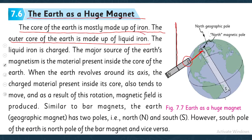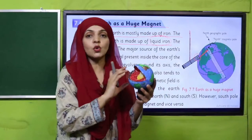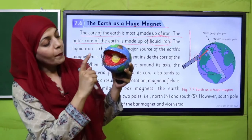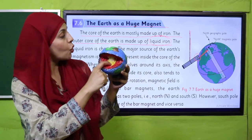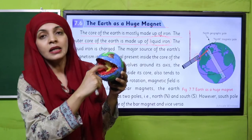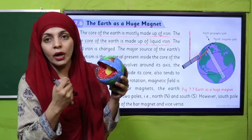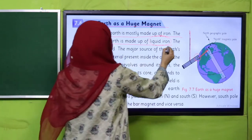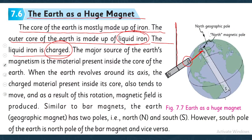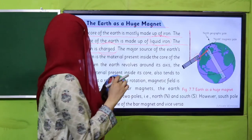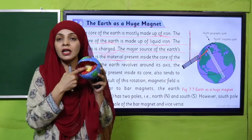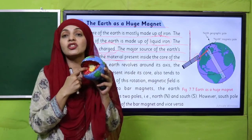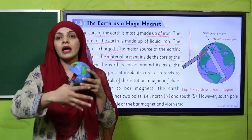The outer core of the Earth is made up of liquid iron. The core has two parts: the inner part and the outer part. The outer core — the outer part — is made up of liquid iron; it is made of molten iron. The liquid iron is charged — it has charges in it. The major source of Earth's magnetism is the material present inside the core of the Earth. The inner core is also made of iron, the outer core is made of liquid iron, and this liquid iron is charged — that is why the Earth becomes magnetized.